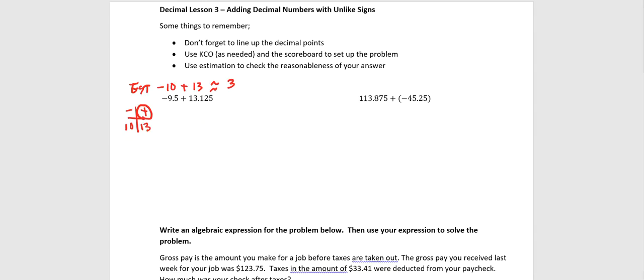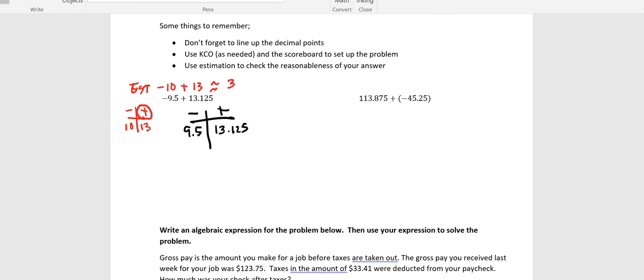Now let's actually set the problem up and see if we get something that's in that ballpark. I have my negative side and my positive side, 9.5 is my negative, 13.125 is my positive, and we can see right away that our answer is most definitely going to be a positive answer. We can also see from the scoreboard, because the numbers are on opposite sides, we are going to have to subtract.